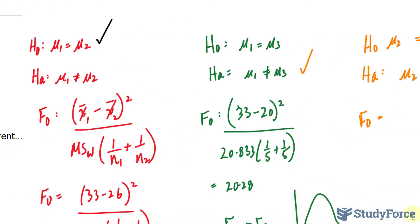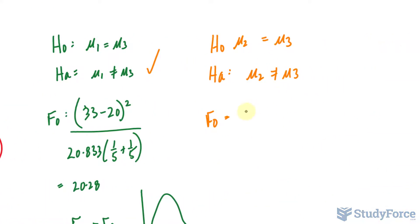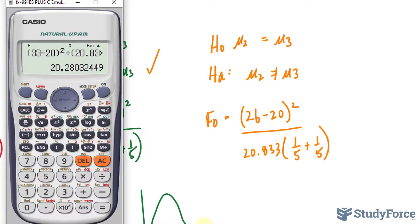The average was 26, and we'll subtract 20 from that. So 26 minus 20 raised to the power of 2 over 20.833. They both have 5 individuals in their groups. Let's use our calculator. Change this to 26 and that 20. We get 4.32.